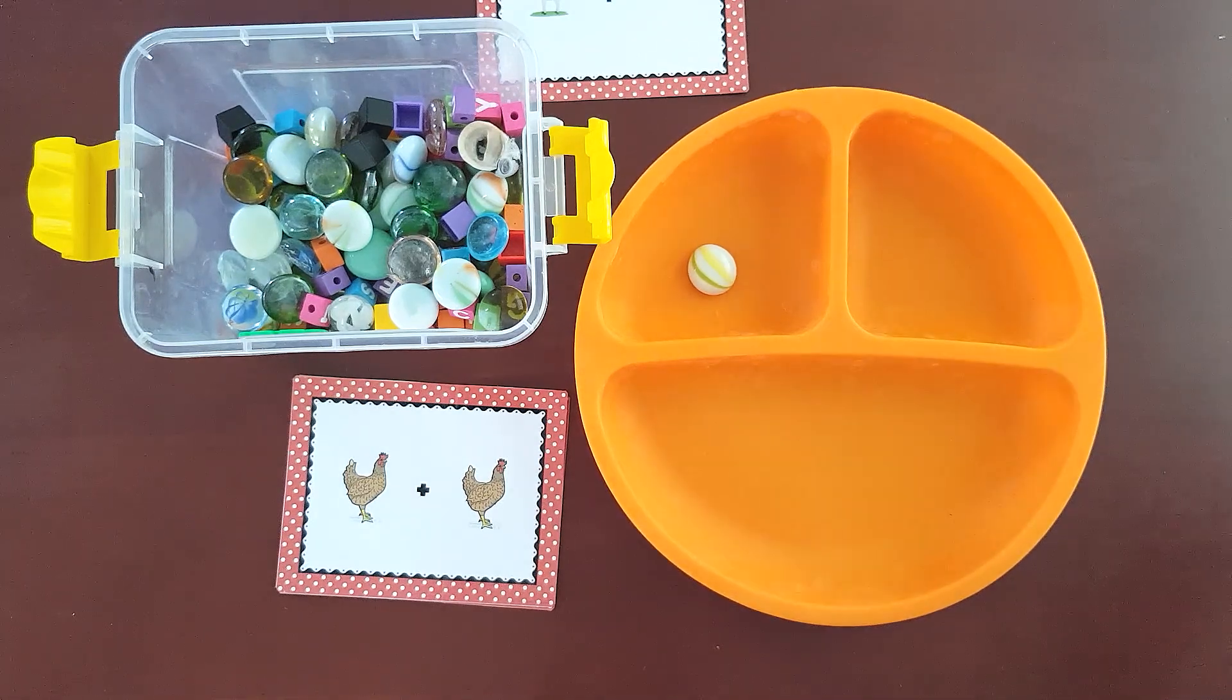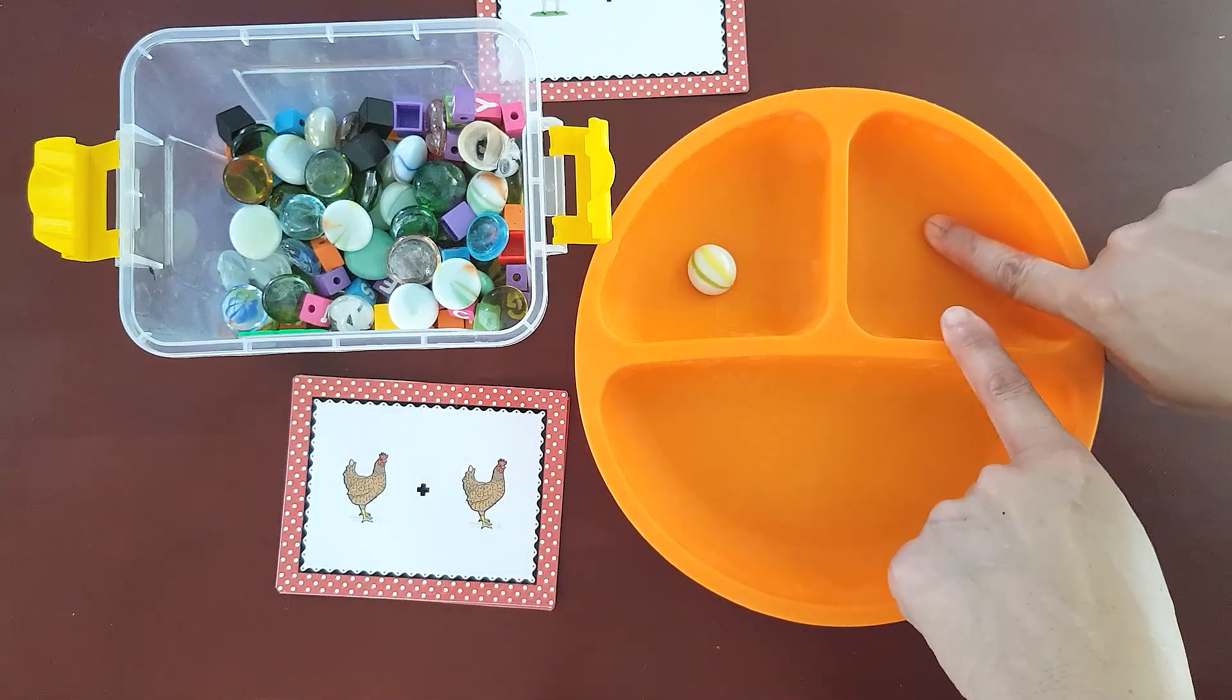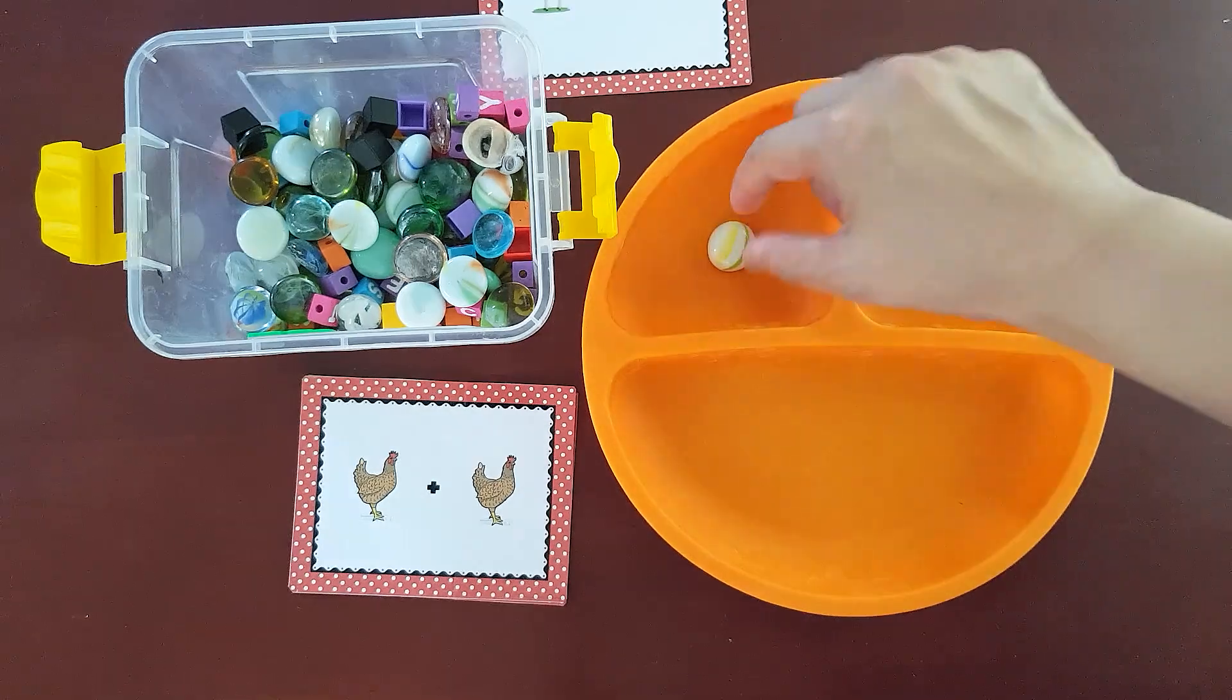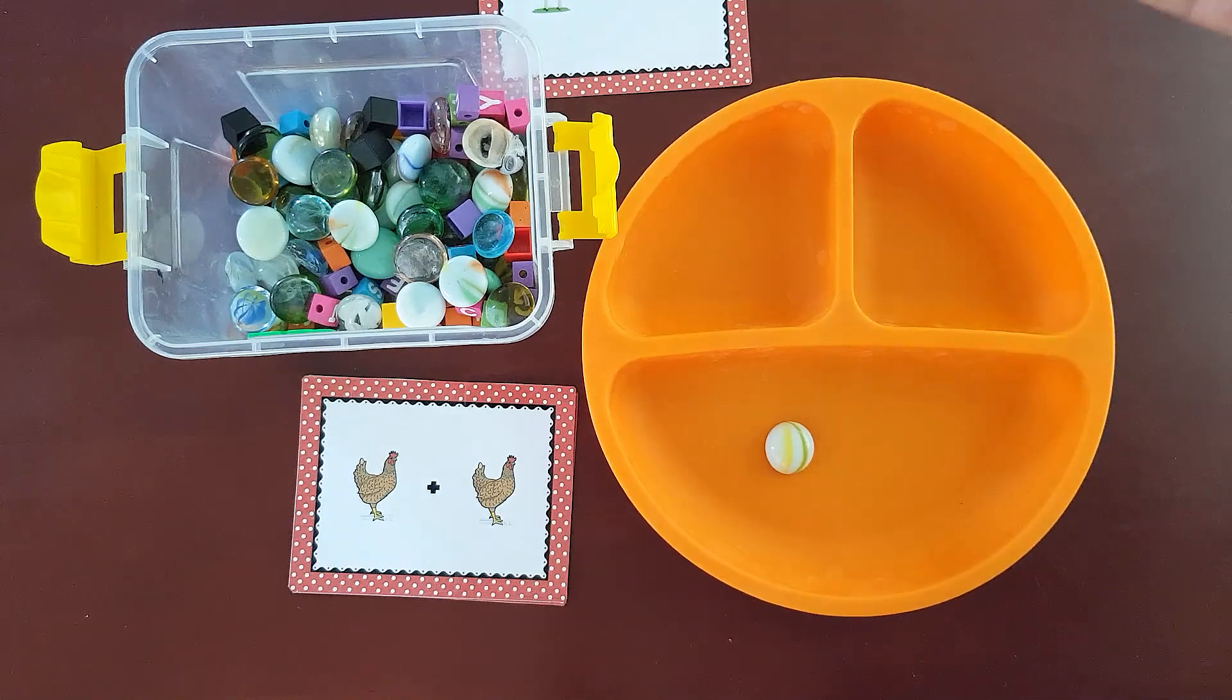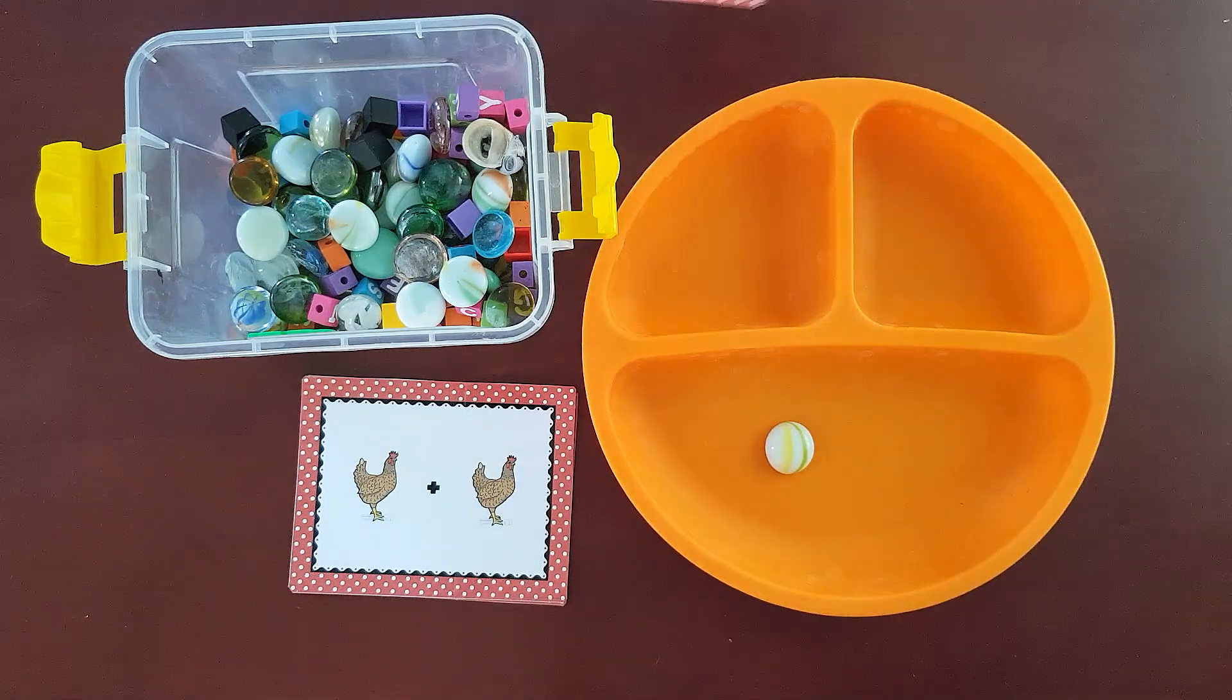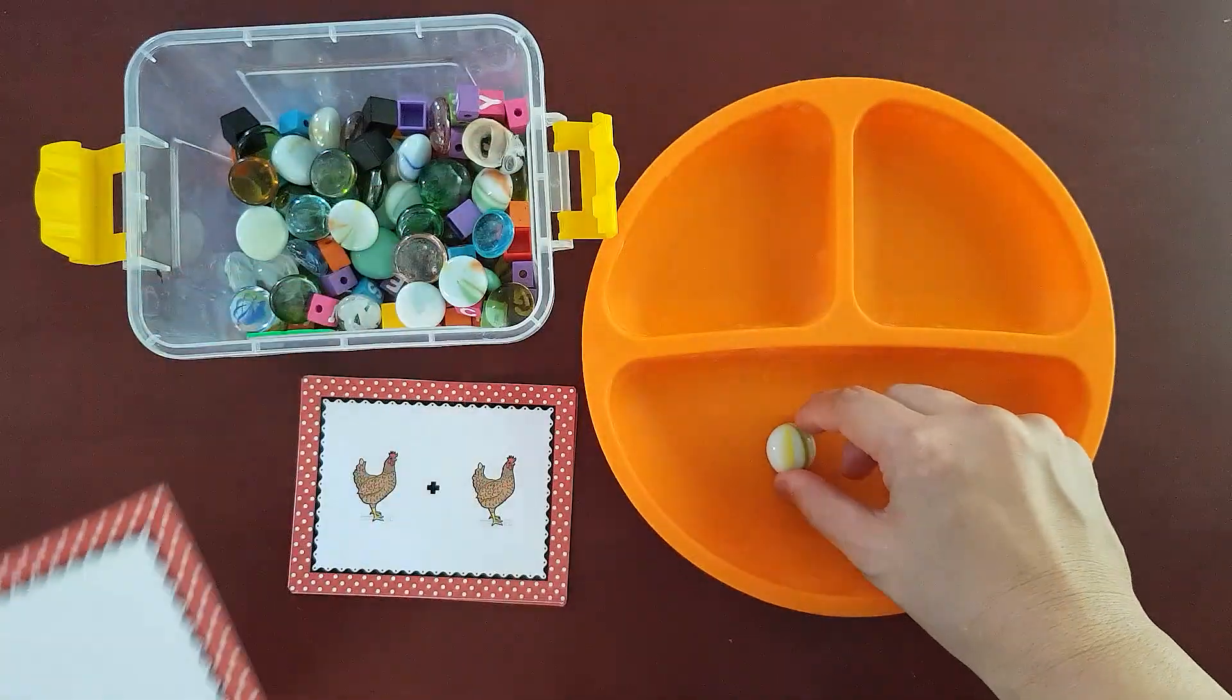And then addition is basically putting things together. So I'll combine the counters from here to the bigger compartment. And now I'm gonna put this one here. And since this has nothing, I won't do anything. I won't place anything in the bigger compartment.